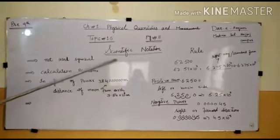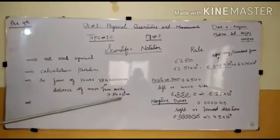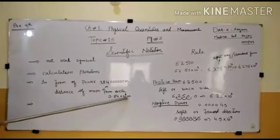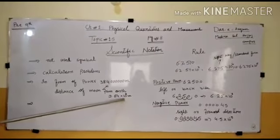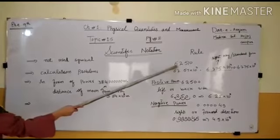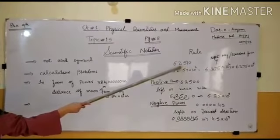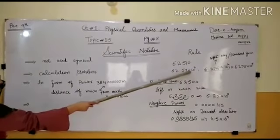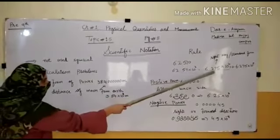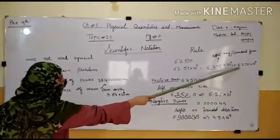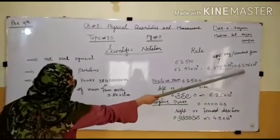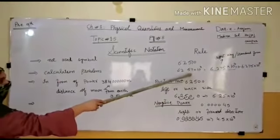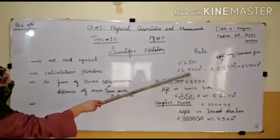In short, we have scientific notation. The equation has already given us, so we can write this as 3.84 times 10 to the power 8 meters. For example, this number 6.2575 can be written as 6.275 times 10 to various powers.